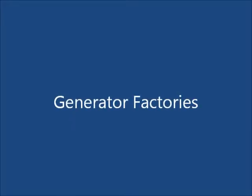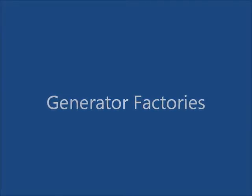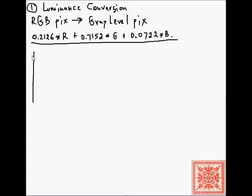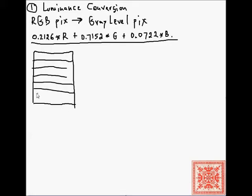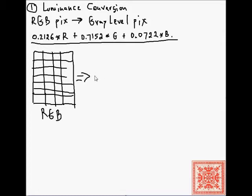Let's talk about generator factories. Do we have to use generators to solve this problem? The answer is no, but it is a very elegant solution to the problem of image luminance conversion and binarization. We're going to write a generator factory in Python that will take RGB images and produce Python generators.